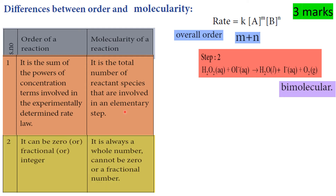Next point — order can be zero, a fraction, or an integer. Molecularity is always a whole number; it cannot be zero or a fraction. For example, order can be 1.5 or 2.5, but molecularity cannot.